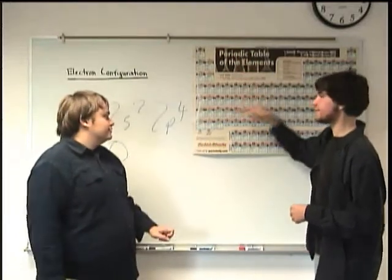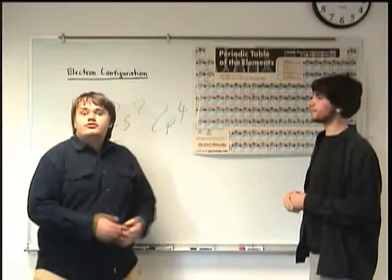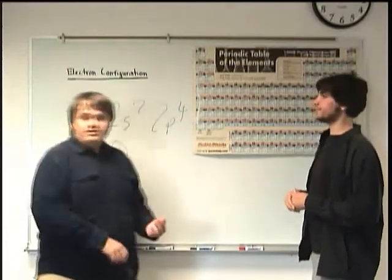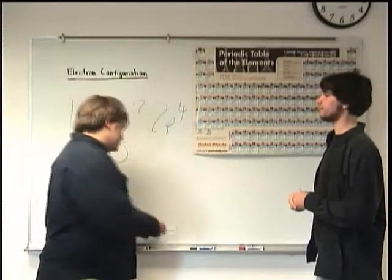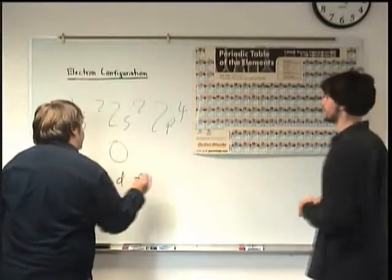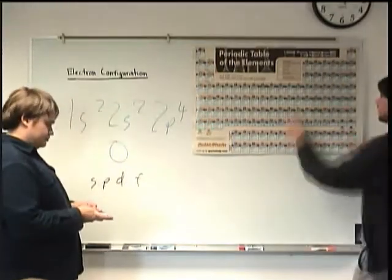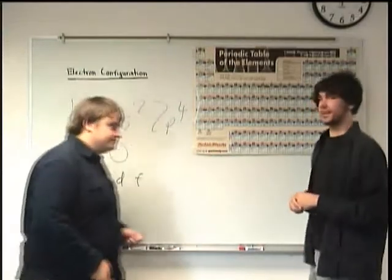The periodic table is divided into energy levels: one, two, three, four, five, six, seven. Yes, so each period has its own level. These levels are also called shells. Now, as you may also remember, the shells are divided into what are called subshells: S, P, D, and F. They represent blocks on the periodic table.